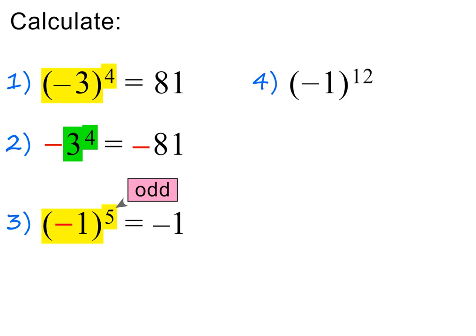In the next example, we are asked to calculate minus 1 all to the power of 12. The base is again negative 1, and also inside brackets. But this time the exponent is even, so the answer is positive 1.